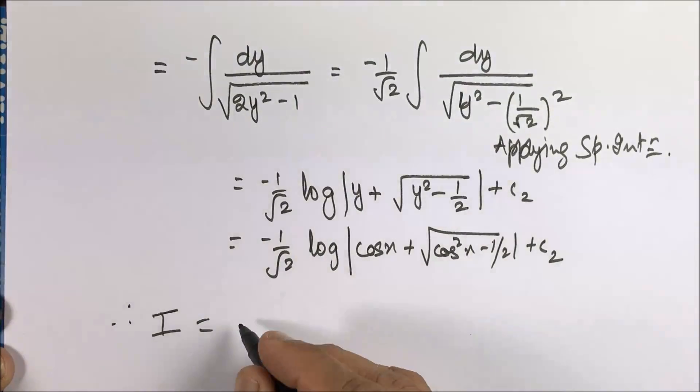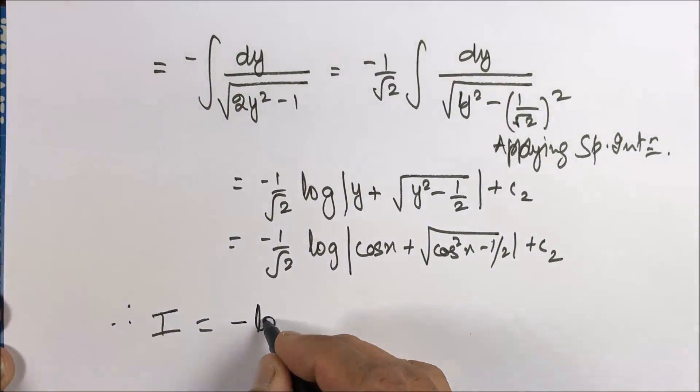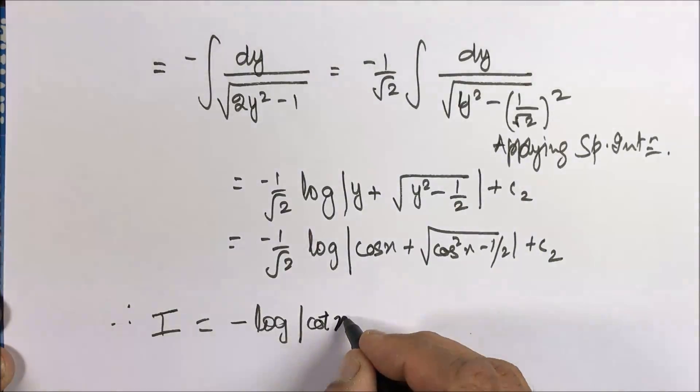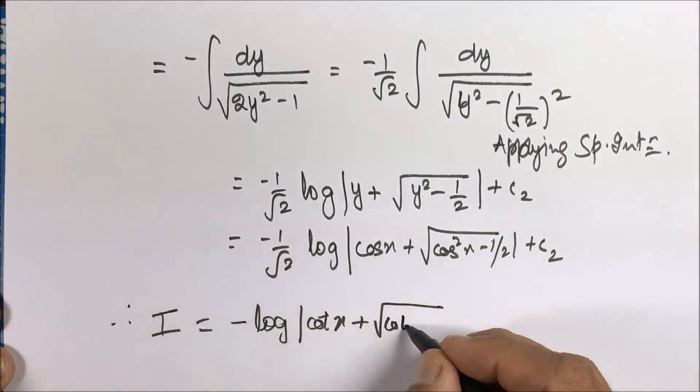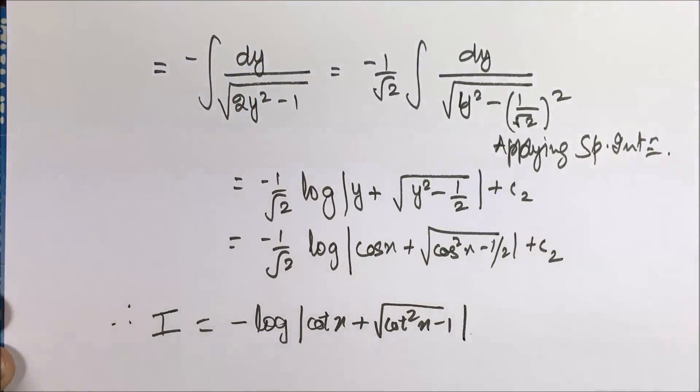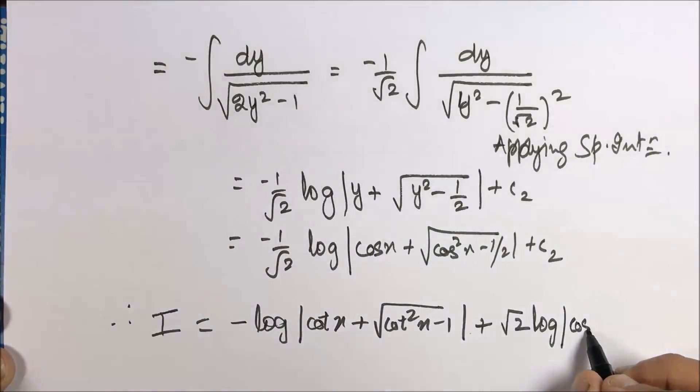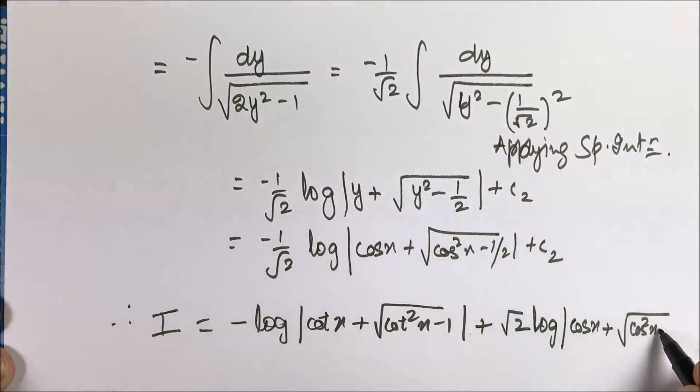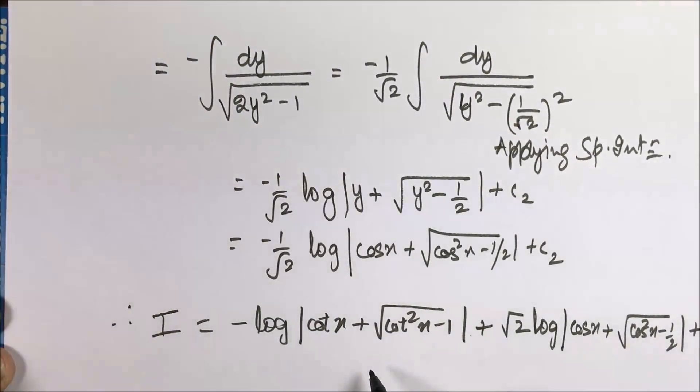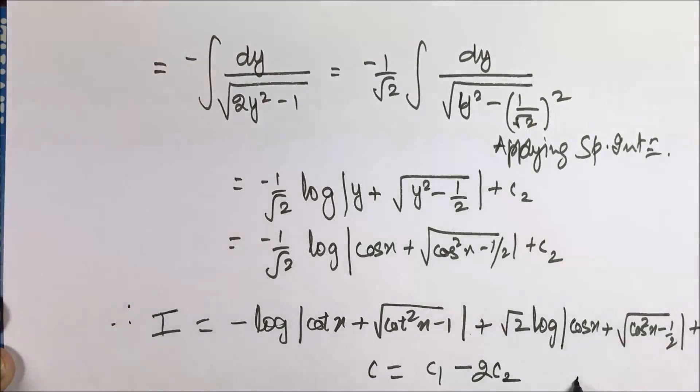So the answer is minus log mod cot x plus under root of cot square x minus 1 minus minus 2 times of I2. So this minus 2 and minus 1 by root 2, which is the answer of the second part, will take you to plus root 2 log mod cos x plus under root of cos square x minus 1 by 2 plus c. And remember c is c1 minus 2 times c2. This is the answer.